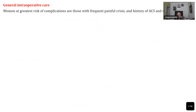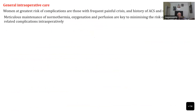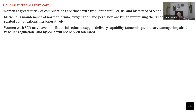For general intraoperative care, patients with risk of frequent crises and ACS represent a very severe form of sickle cell disease. Meticulous maintenance of normal temperature, oxygenation, and perfusion must be kept in mind. They may have multifactorial reduced oxygen delivery capability, not only because of anemia but also due to pulmonary conditions and impaired vascular regulation, and they cannot tolerate even very mild hypoxaemia.